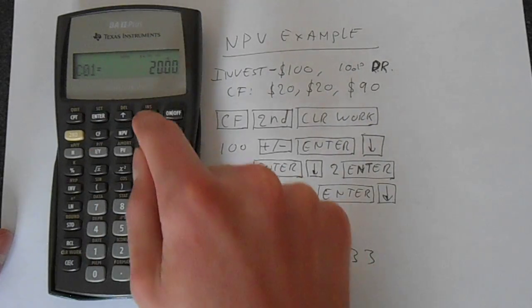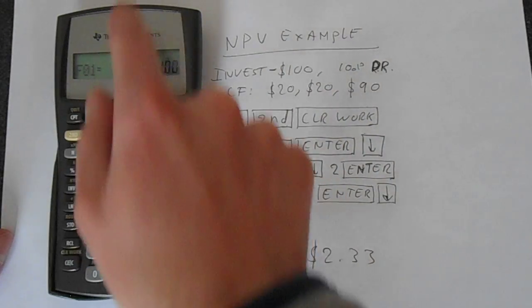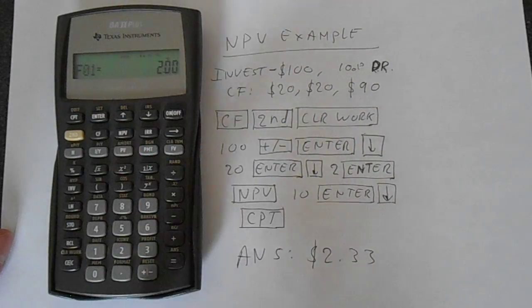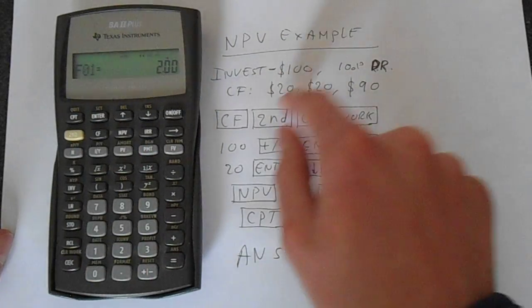then press enter, then go down. This is the frequency of cash flow 1, which is 2. Press enter, and that's us entering these two $20 cash flows.